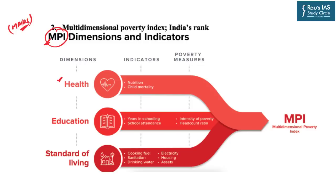This is reflected in the indicators, which again have three broad classifications — health, education, and standard of living — but the sub-indicators reveal poverty's multidimensional nature. They include nutrition, child mortality, years in schooling, school attendance, cooking fuel, sanitation, drinking water, electricity, housing, as well as assets owned. So whenever you have to suggest steps to reduce the poverty ratio in any region, you must think on all these parameters.